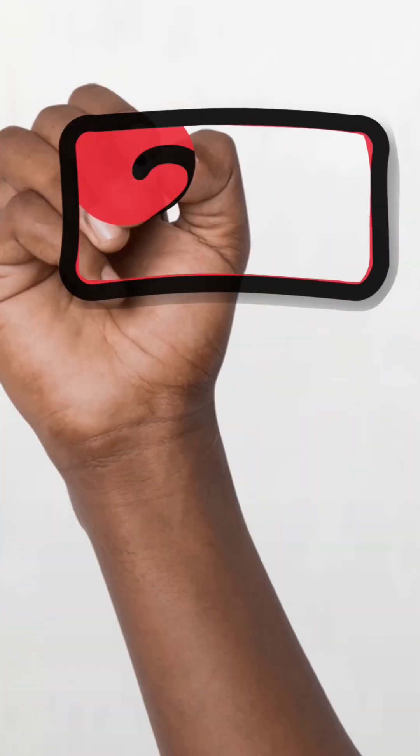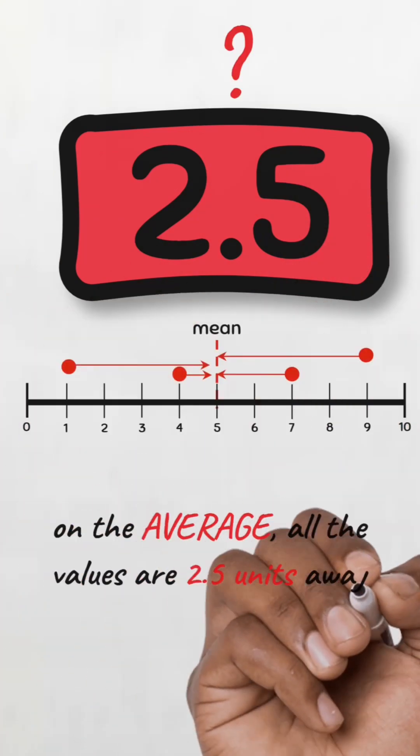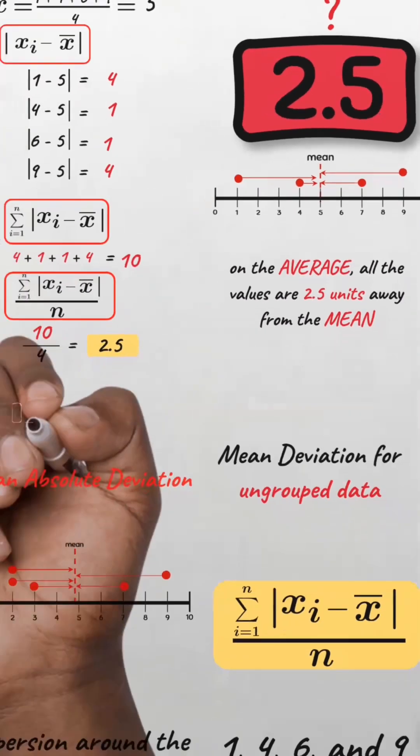Now what does the mean absolute deviation of 2.5 mean? It implies that on average, all the values in this data set are 2.5 units away from the mean. Easy peasy.